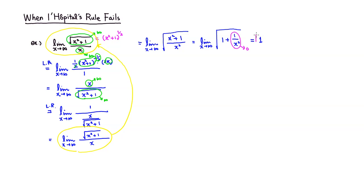So the limit does exist and is equal to 1 in this particular case, but L'Hopital's rule doesn't get you anywhere. This is an example where L'Hopital's rule completely fails. That's it — I hope that was clear.